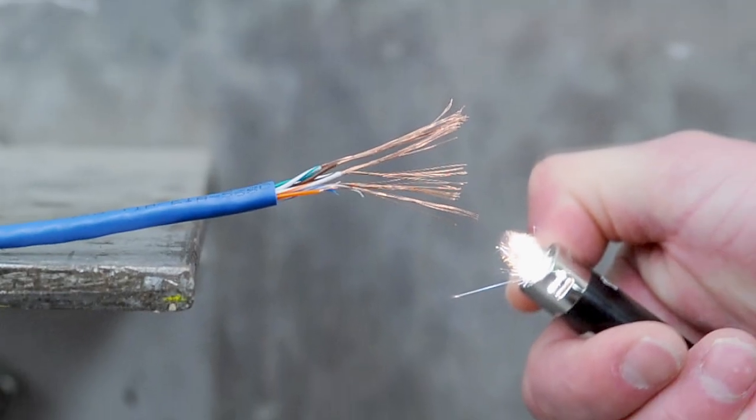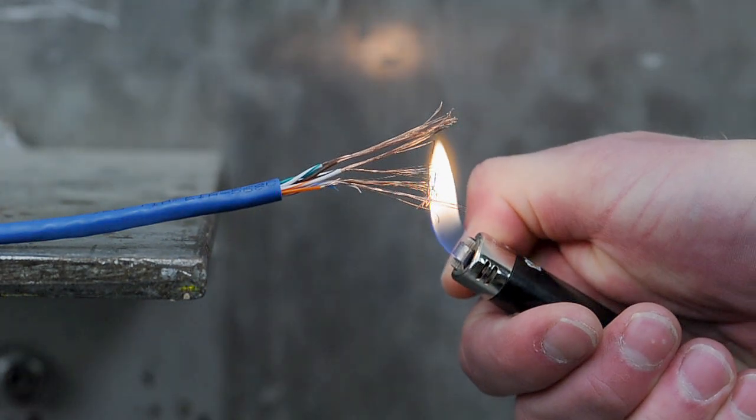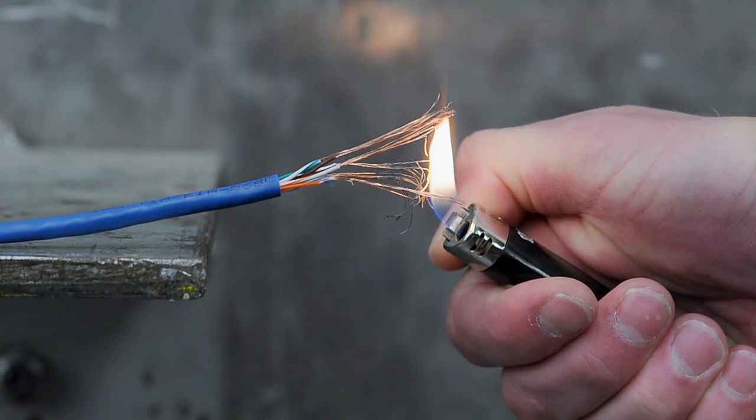If you think that all these stats don't matter in the real world, then check out this real world test. Here we have an aluminum patch cable. When we apply heat, the cable becomes brittle and breaks.